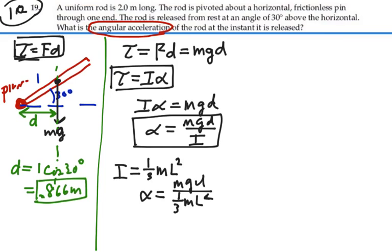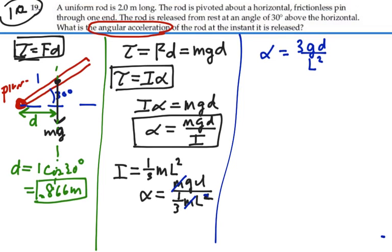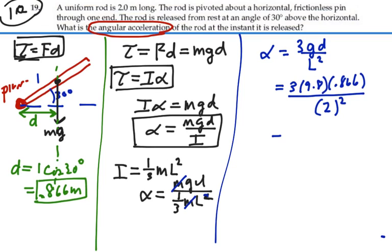The m's cancel out, so we have the angular acceleration equal to 3gD over L². That's going to be 3 times 9.8 times the moment arm of 0.866, over L which is 2 meters, squared. That equals 6.37 radians per second squared.